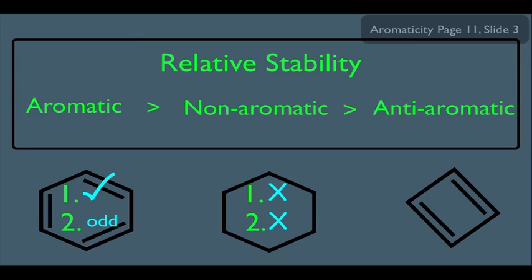And to be anti-aromatic, number one, you would have the uninterrupted pi cloud, but you would simply have an even number of pair of pi electrons.